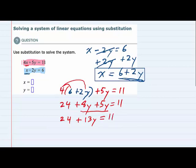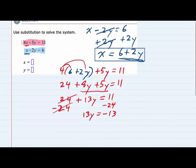And then continue isolating the y. I would move the 24 to the other side by subtracting. The 24s cancel, and we now have 13y equals 11 minus 24 is a negative 13. And then our final step is to get the y by itself by dividing 13 on both sides. The 13s cancel, and we have y equals negative 1.